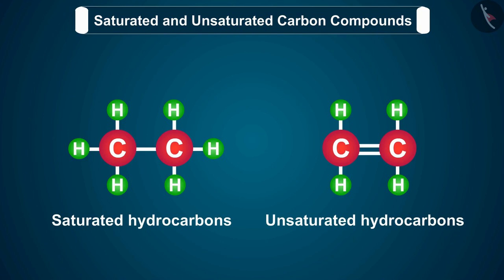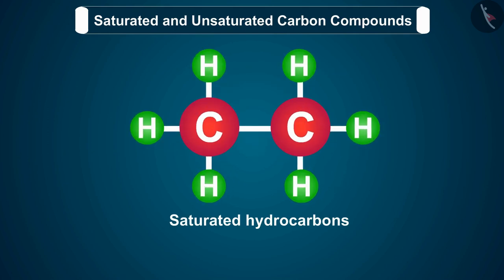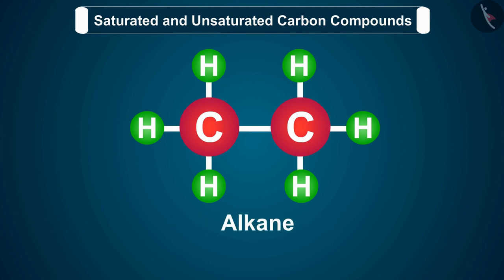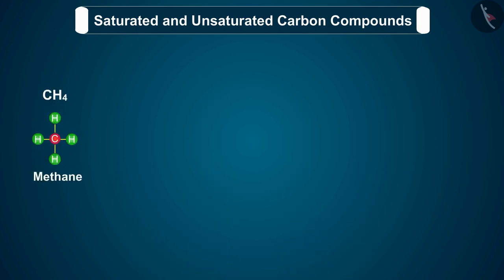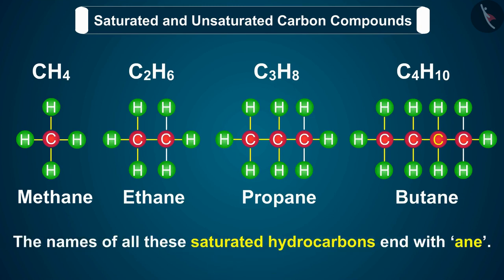First of all, we will discuss about saturated hydrocarbons, and they are also called alkanes. A hydrocarbon in which carbon atoms are connected only by single bonds is called a saturated hydrocarbon. It is also called an alkane. Thus the hydrocarbons methane, ethane, propane, and butane are alkanes. The names of all these saturated hydrocarbons end with '-ane'.